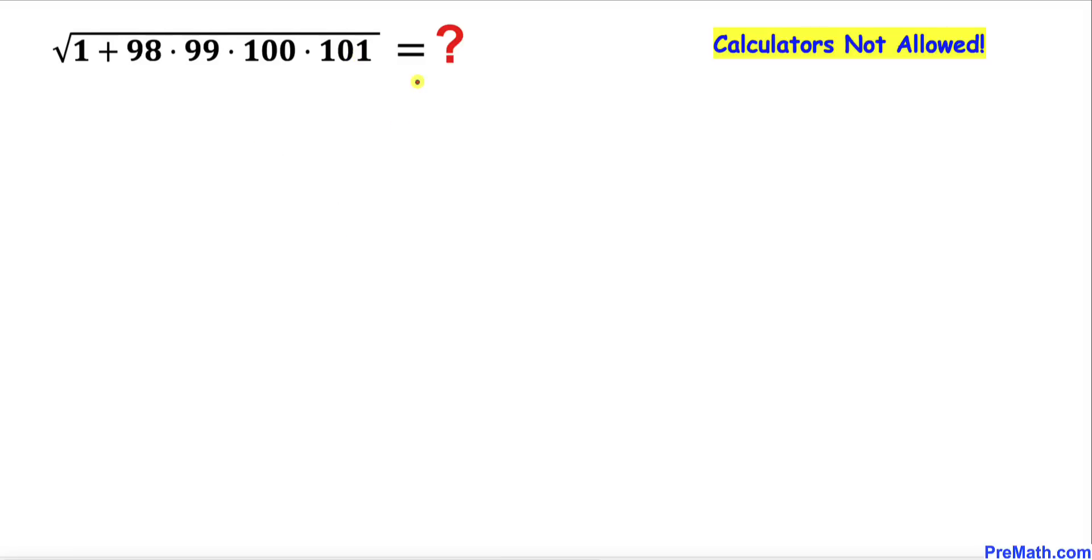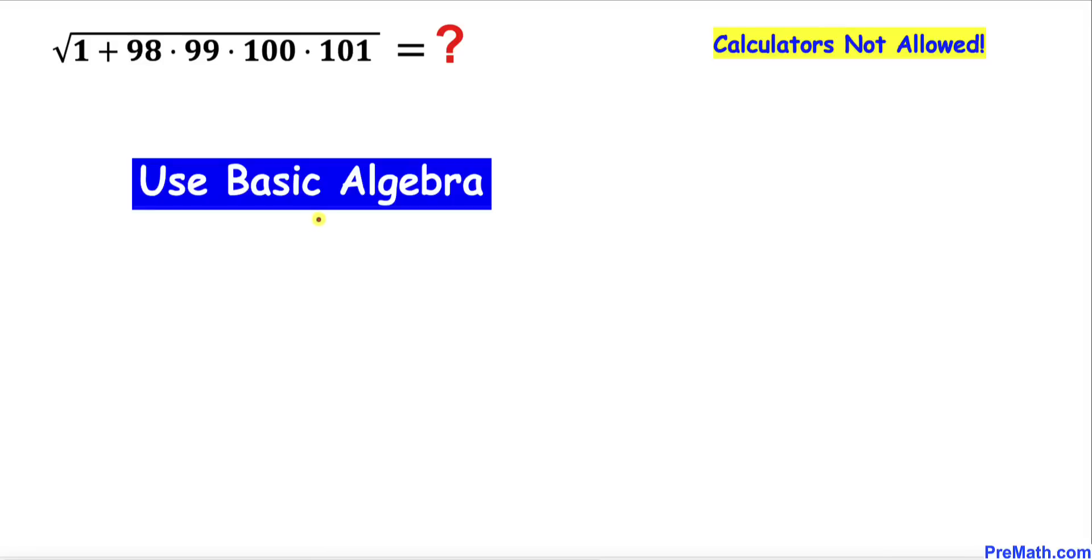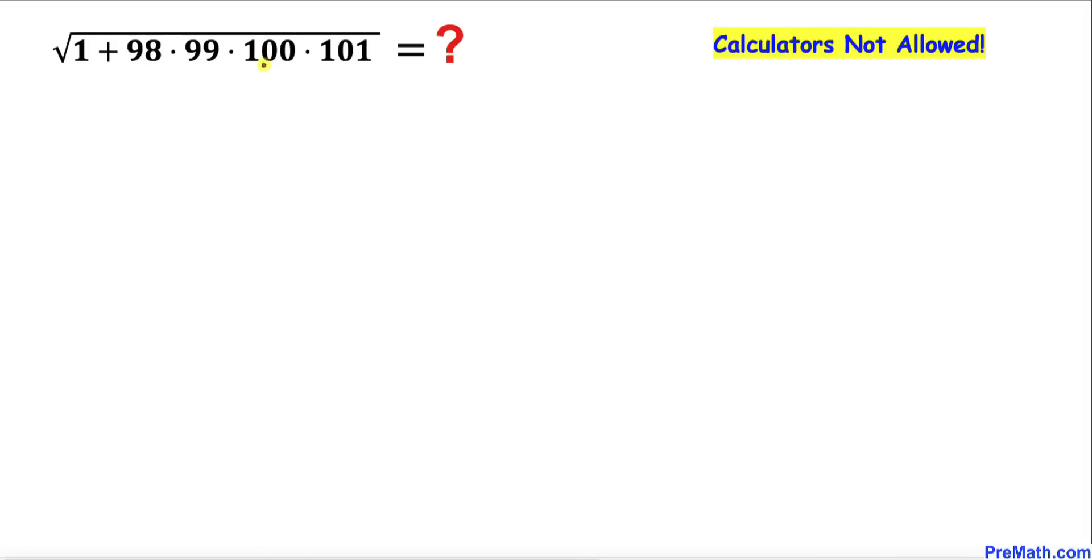So let's get started with the solution. We are going to use basic algebra to solve this problem. Let's focus on this problem and we can see that 100 is easy to deal with. I'm going to call this number x. Then this 98 is going to become x minus 2, this 99 is going to become x minus 1, and this 101 is going to become x plus 1.